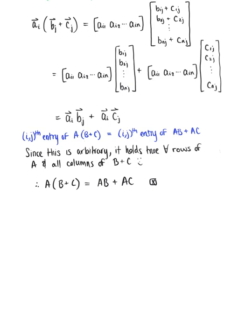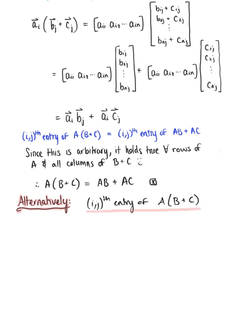Now that we have shown this in the full row and column vector form, we can alternatively verify this using sigma notation. If we again consider the i-th j-th entry of matrix A multiplied by the sum of matrix B and matrix C, in sigma notation this is the sum from k equals 1 to n of the entry in the i-th row, k-th column of matrix A, multiplied by the entry in the k-th row, j-th column of matrix B plus the entry in the k-th row, j-th column of matrix C.